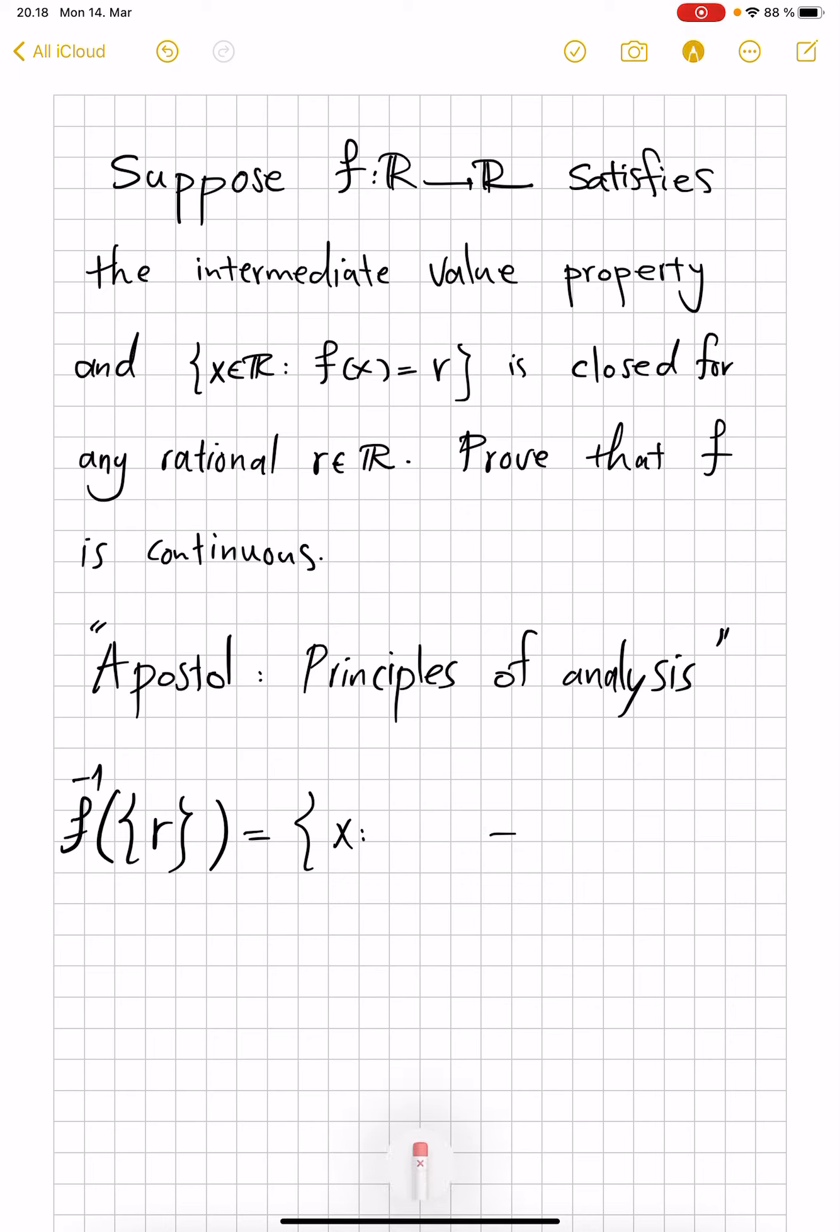The exercise is giving us a converse to these facts: that if f satisfies intermediate value property, and if these singleton preimages are closed, then f is continuous. And it's a bit stronger because you need to check this closeness of preimages only along rational values.